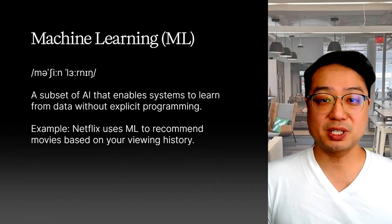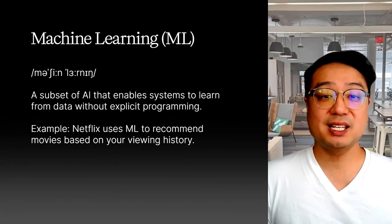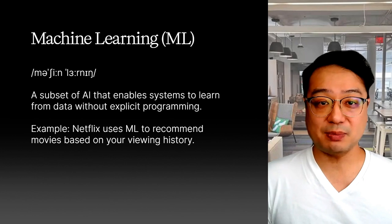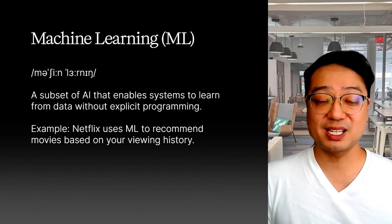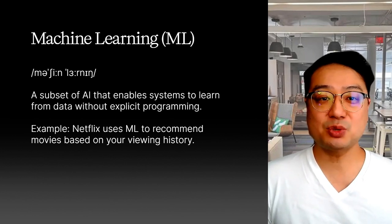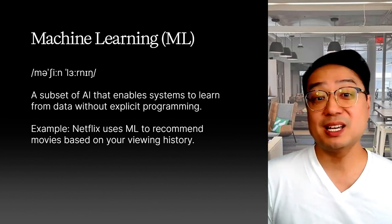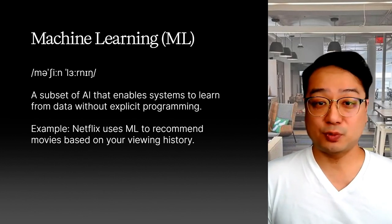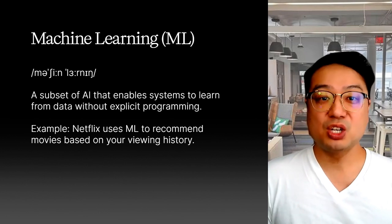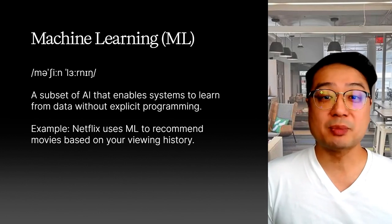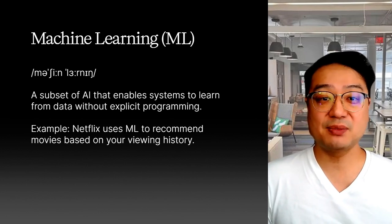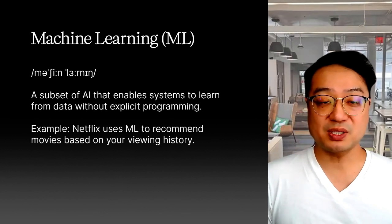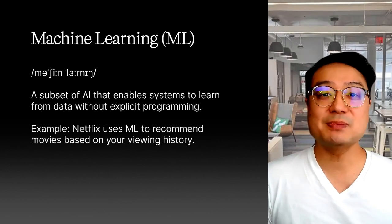Next, machine learning. This is how we teach AI. Instead of programming every single step, we give the computer a ton of data and let it learn from that data. Imagine teaching a kid to recognize cats. You don't tell them cats have pointy ears, they have whiskers, they're furry, and so on. You just show them a bunch of pictures of cats, and eventually they figure it out themselves. That's machine learning.